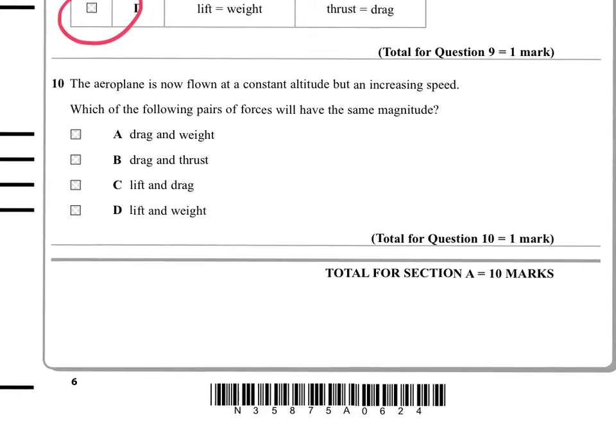Question ten. The airplane is now flown at a constant altitude but an increasing speed. Which of the following pairs of forces will have the same magnitude? Constant altitude relates to the vertical forces. If it's not rising or falling in the vertical direction, then the vertical forces are in balance. We're looking for the vertical pair, so it's lift and weight. Again, we're talking D.